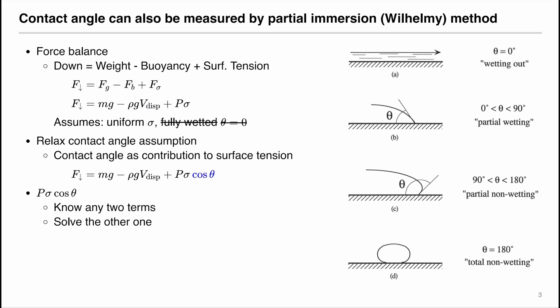Similarly, using the force method, we can also determine the contact angle if we relax the contact angle assumption, given we know the surface tension of the liquid. When liquid contacts solid, the contact angle is defined within the liquid phase. It can be zero degrees, representing full wetting, between zero and 90 degrees for partial wetting, between 90 and 180 degrees for partial non-wetting, or 180 degrees representing total non-wetting, where the liquid beads up and does not contact the solid surface.